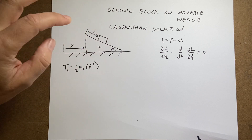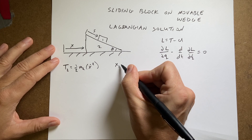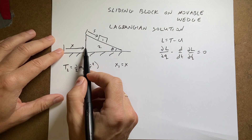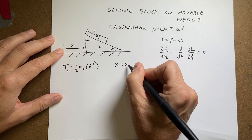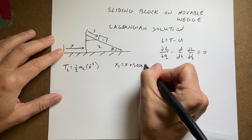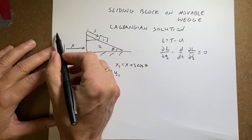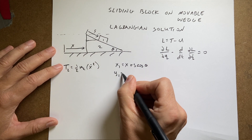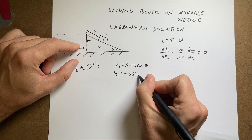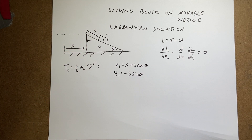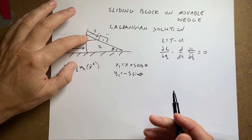For the block, I need its x and y coordinates. x1 is going to be x plus s·cosθ — the wedge position plus the horizontal component of s along the slope. For y1, I'll call the top y equals zero, so y1 is negative s·sinθ. The negative sign matters because the block moves downward as s increases, so y1 has a negative value even though s itself is positive.